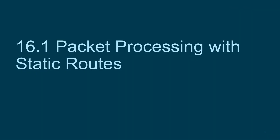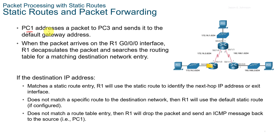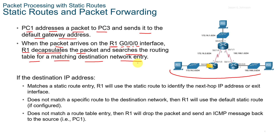16.1 Packet Processing with Static Routes. PC1 addresses a packet to PC3 and sends it to the default gateway address. When the packet arrives on the Router1 G0/0/0 interface, R1 decapsulates the packet and searches the routing table for a matching destination network entry. If the destination IP address matches a static route entry, R1 will use the static route to identify the next hop IP address or exit interface.